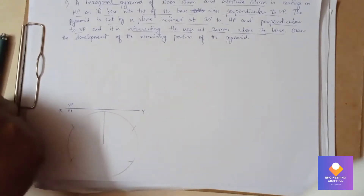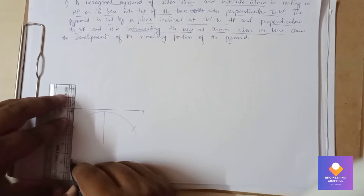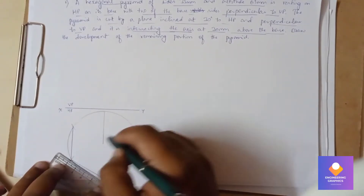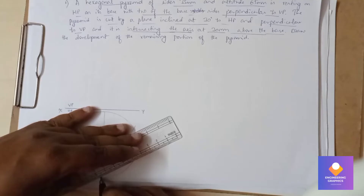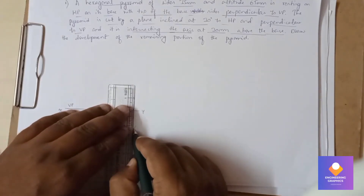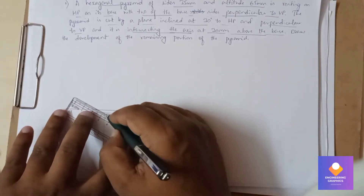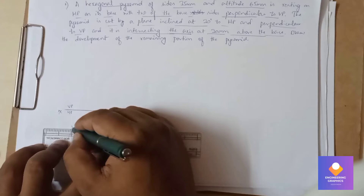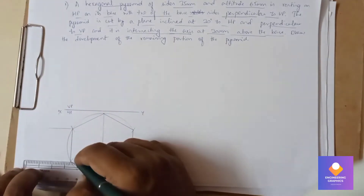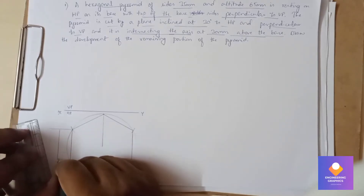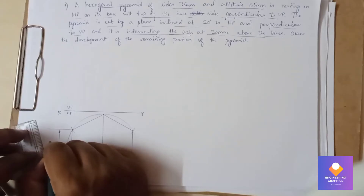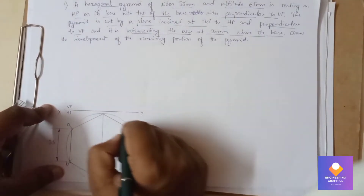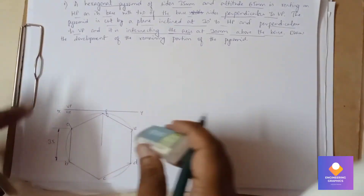Connect all the arc points with a scale using straight lines. Show the dimension — it is 35mm. You can mention the naming: A, B, C, D, E, F, and then erase the circle that was used to construct the hexagon.